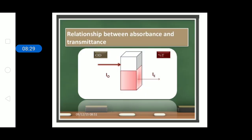The relationship between absorbance and transmittance is shown in the figure. The light emitted from the source is I₀ (incident intensity), while the light intensity received after passing through the solution is I. Since I is less than I₀, this implies that light has been absorbed by the solution.